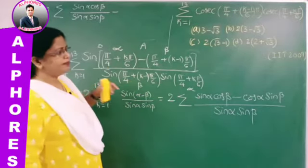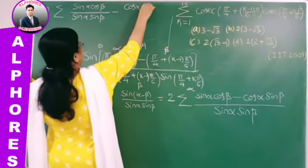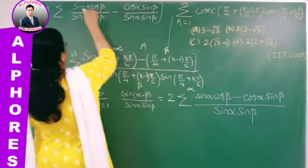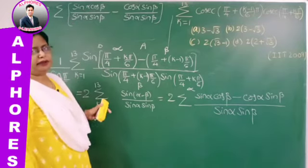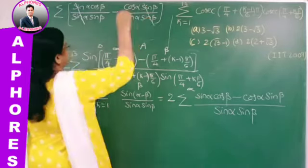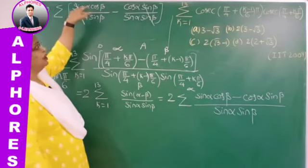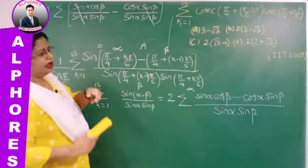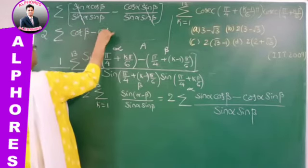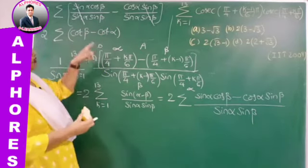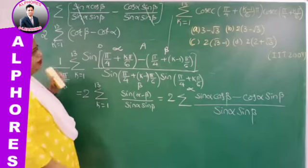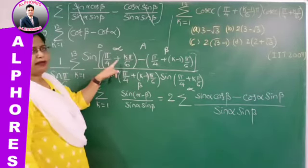After cancellation, only the first and last terms survive: 2·[cot(π/4) − cot(π/4 + 13π/6)]. Now cot(π/4) = 1. For the second term, 13π/6 = 2π + π/6, so π/4 + 13π/6 = 2π + π/6 + π/4 = 2π + 5π/12. Since cot(2π + θ) = cot(θ), this gives cot(5π/12) = cot(75°).